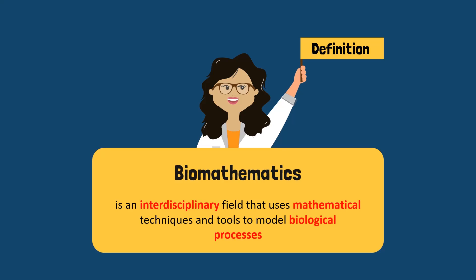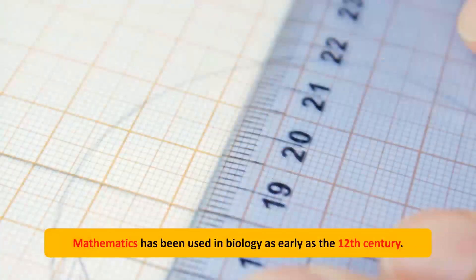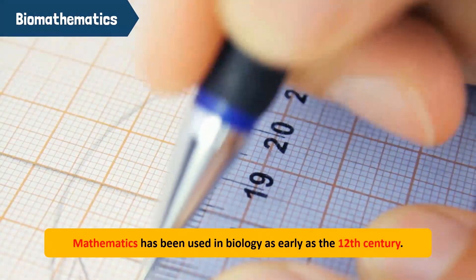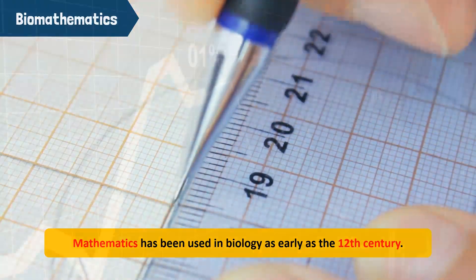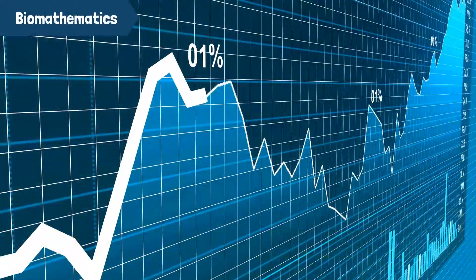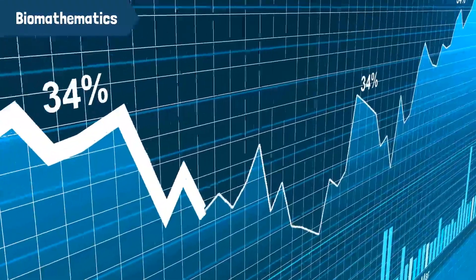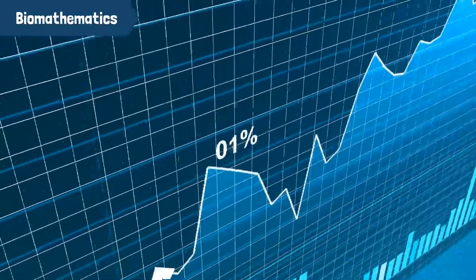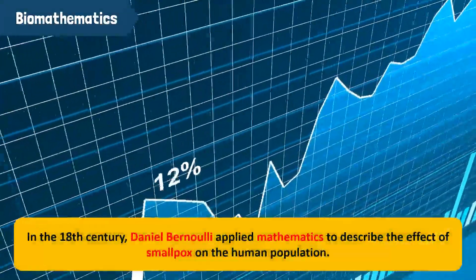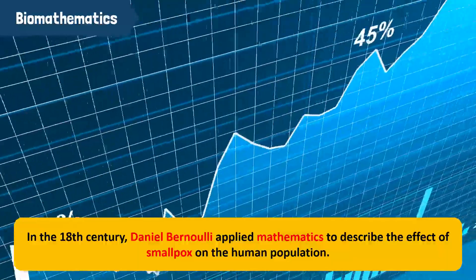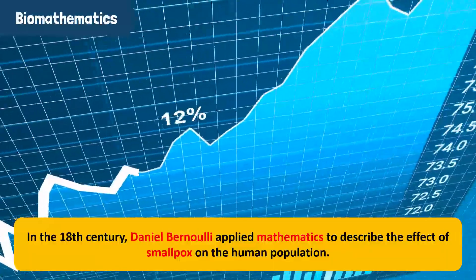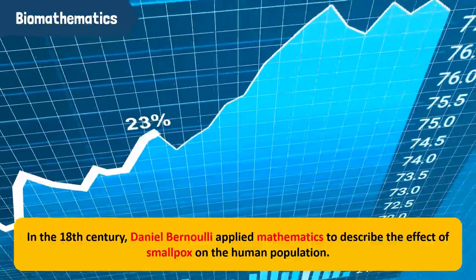Mathematics has been used in biology as early as the 12th century. For example, it can be used for basic raw data gathering that's useful in tracking changes over time. In the 18th century, Daniel Bernoulli applied mathematics to describe the effect of smallpox on the human population.